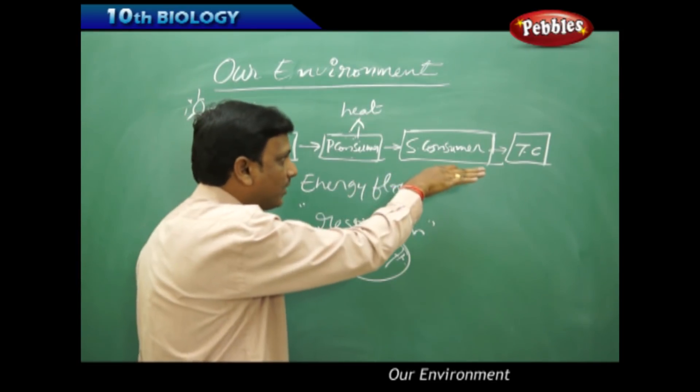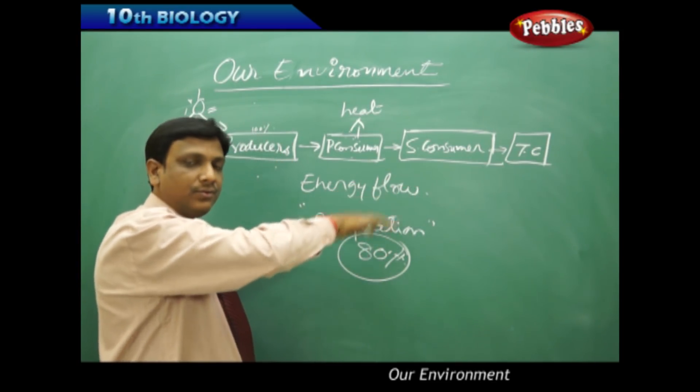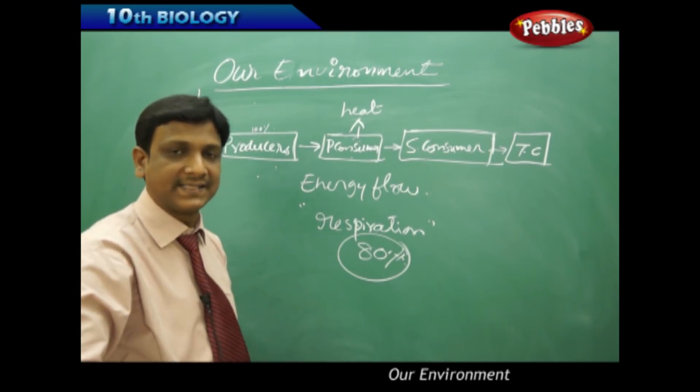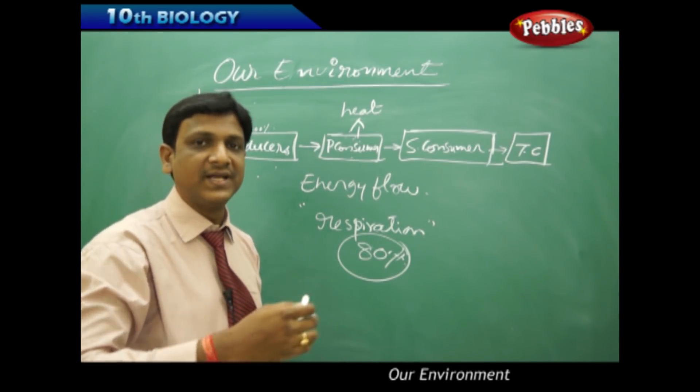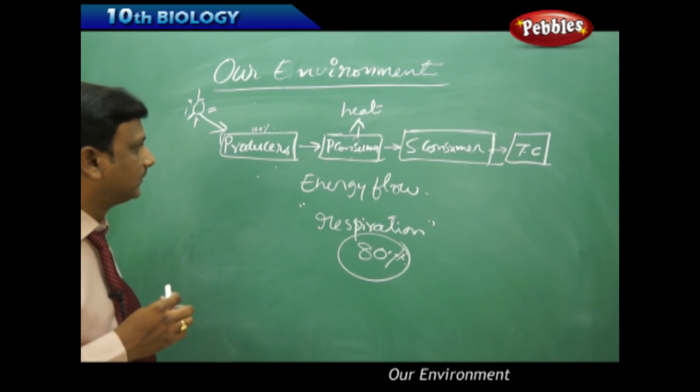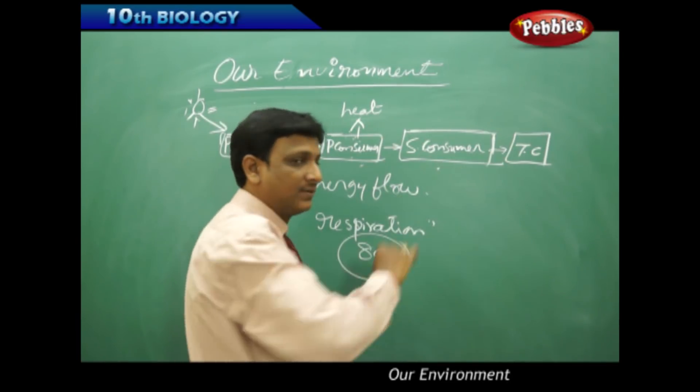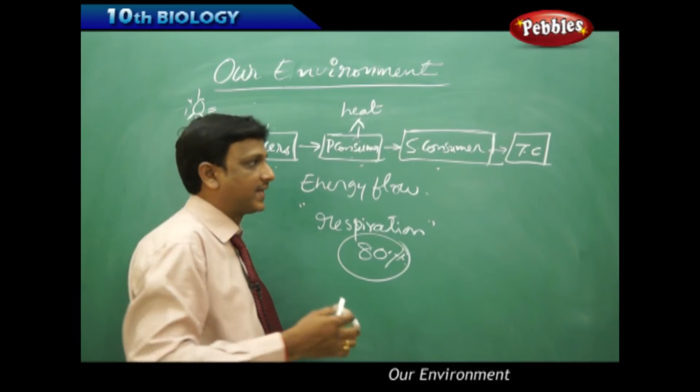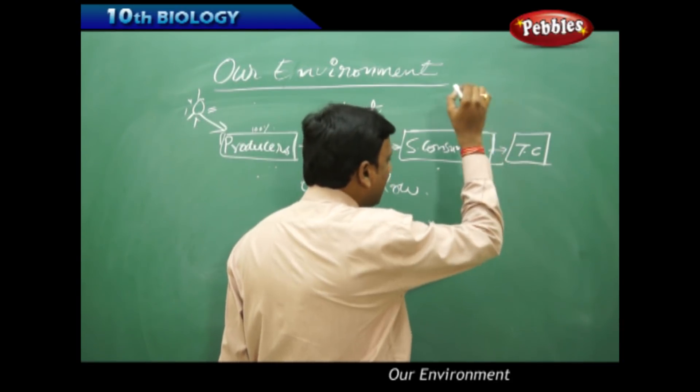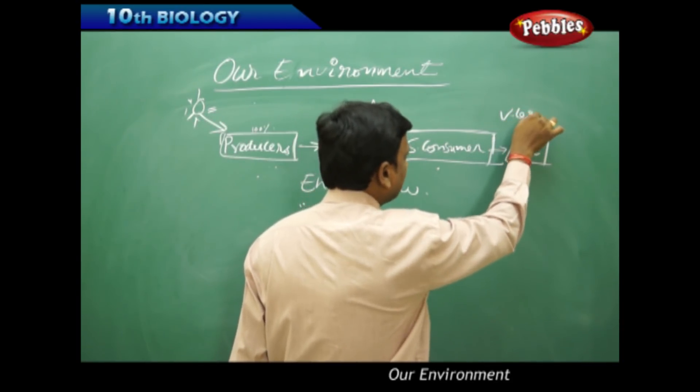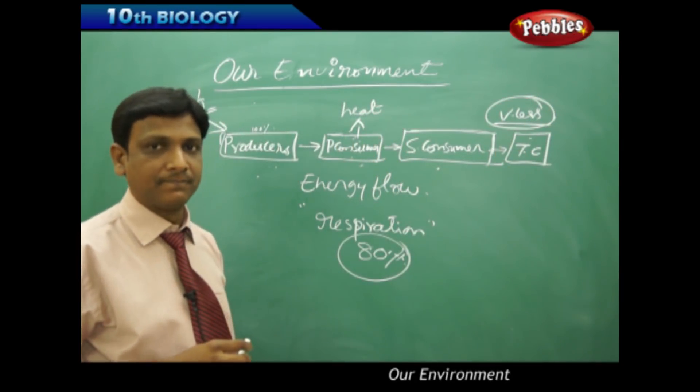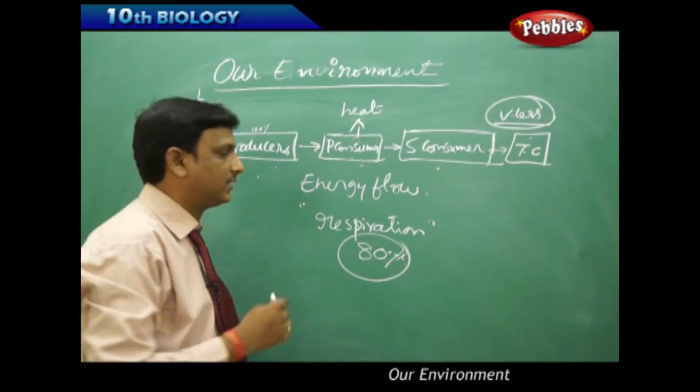So as we are proceeding, going up level by level, the amount of energy available for the next category, the next level, is very less. So we observe that in every food chain, after three steps, for the final top carnivore or final level organism, very little amount of energy is available for the last level. This is what is observed in a food chain.